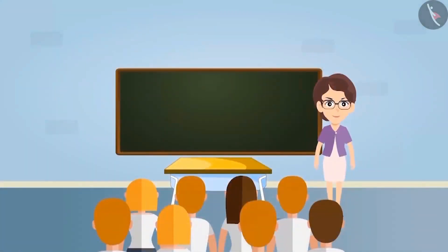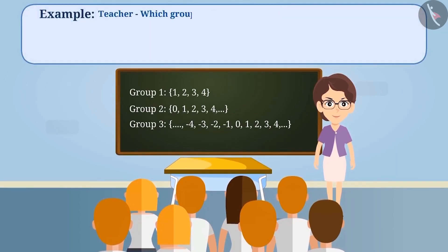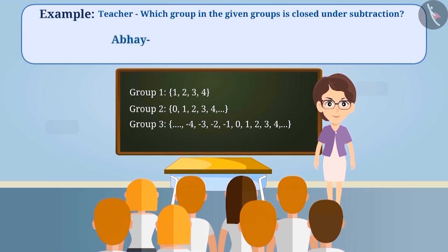One day, a teacher made the following three groups of numbers on the blackboard and asked the children which group in the given groups is closed under subtraction. Abhay answered that group 3 is the right answer. Is Abhay's answer correct?